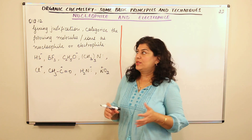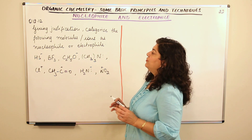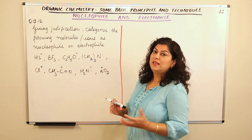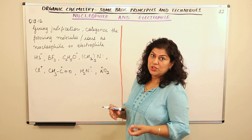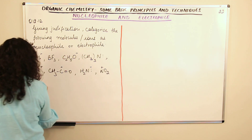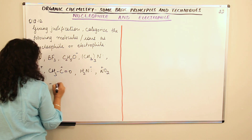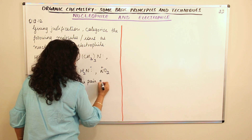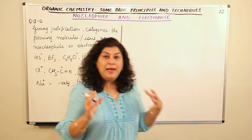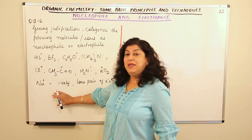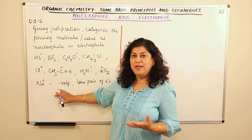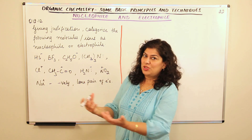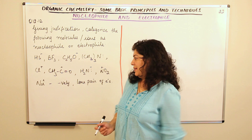Now question 12.12: categorize the following molecules or ions as nucleophiles or electrophiles with justification. A nucleophile is a nucleus-loving species — it loves positive charge. A nucleophile is either negatively charged or has lone pairs of electrons that can be donated, and it gets attracted to positive charge because it can provide electrons.